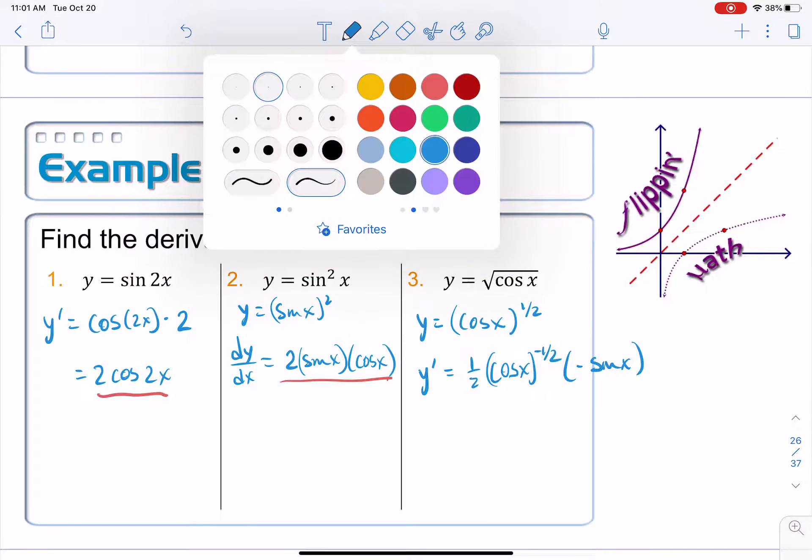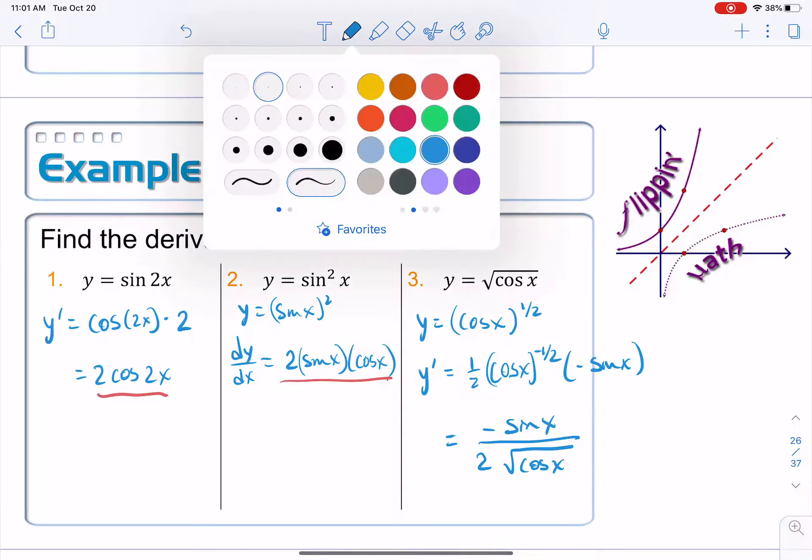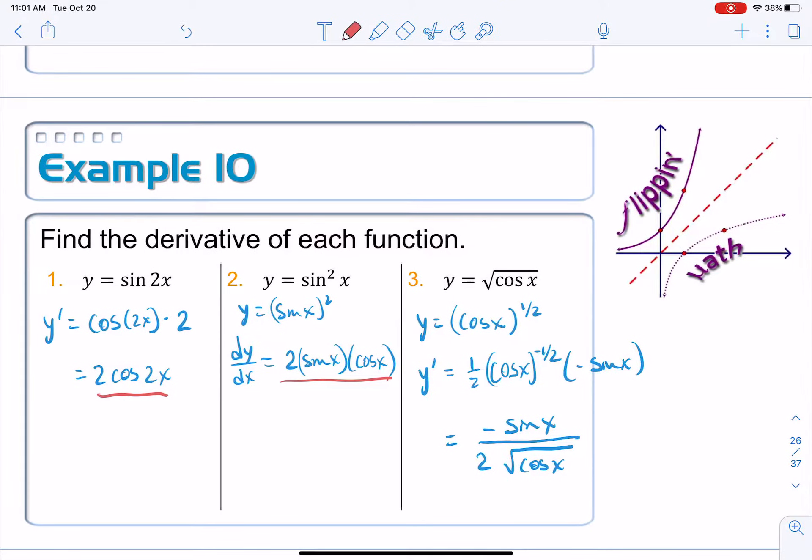All right. Let's just clean it up. The negative does not, unfortunately, cancel with anything. So it's just going to stick around. Negative sine x on top. The 2 will come down to the bottom. And then I'll rewrite the cosine of negative 1 half as the square root of cosine x. Yep. Now it's done.